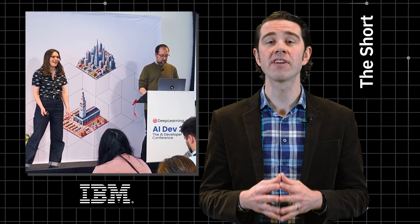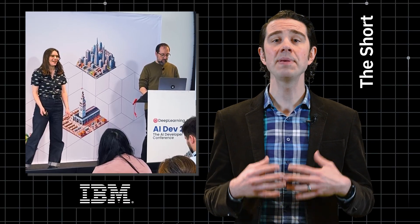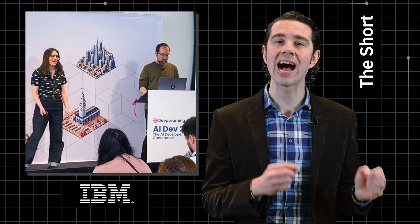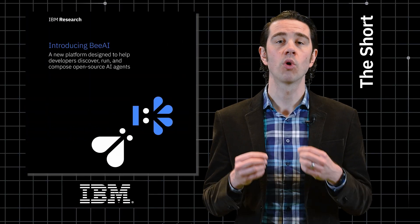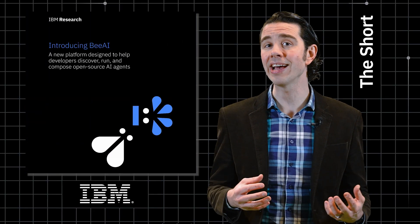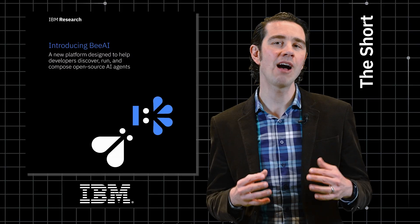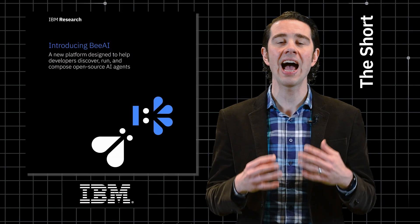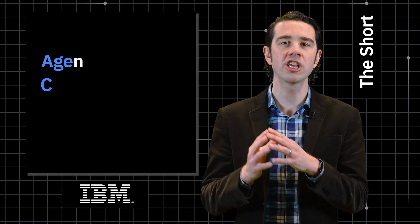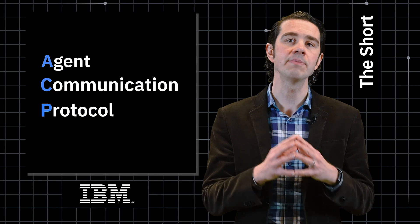At the AI Dev25 conference in San Francisco, IBM Research unveiled BAI, an open-source platform where AI agents collaborate like a hive. This buzz-worthy, pre-alpha release is enabled in part by the IBM Research Design Agent Communication Protocol, or ACP.